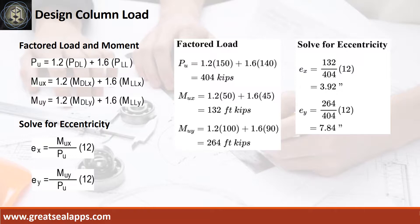Given moment dead load at x-axis of 50 foot-kips and moment live load at x-axis of 45 foot-kips, the factored moment at x-axis is 132 foot-kips with eccentricity of 3.92 inches. Given moment dead load at y-axis of 100 foot-kips and moment live load at y-axis of 90 foot-kips, the factored moment at y-axis is 264 foot-kips with eccentricity of 7.84 inches.